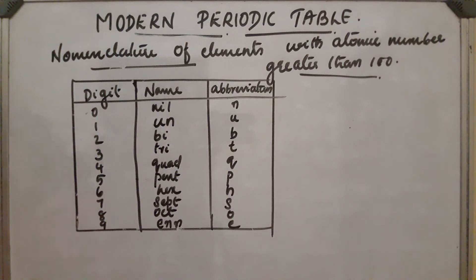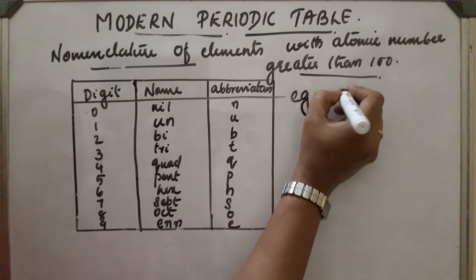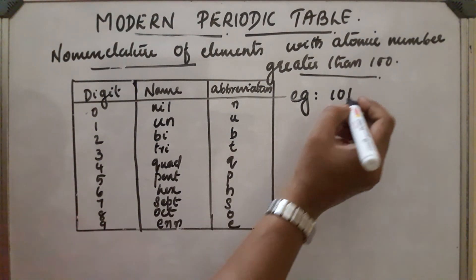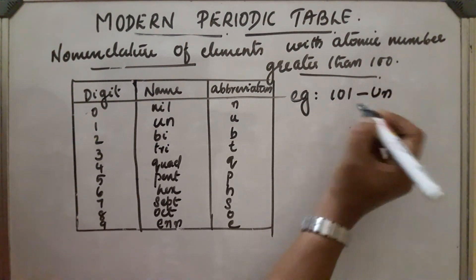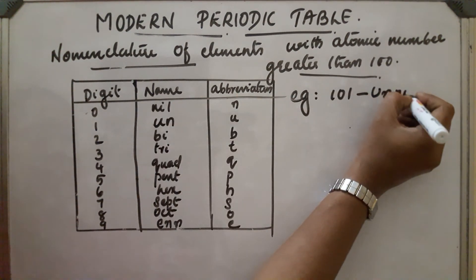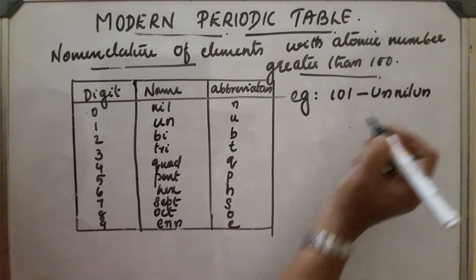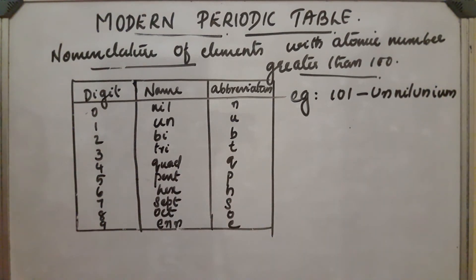Let's take one example: element 101. How do you write the name for 101? 1 is 'un', 0 is 'nil', and then 1 again is 'un', and finally we add 'ium'. So the name for 101 is 'unnilunium'. Later, these elements were discovered and given official names.